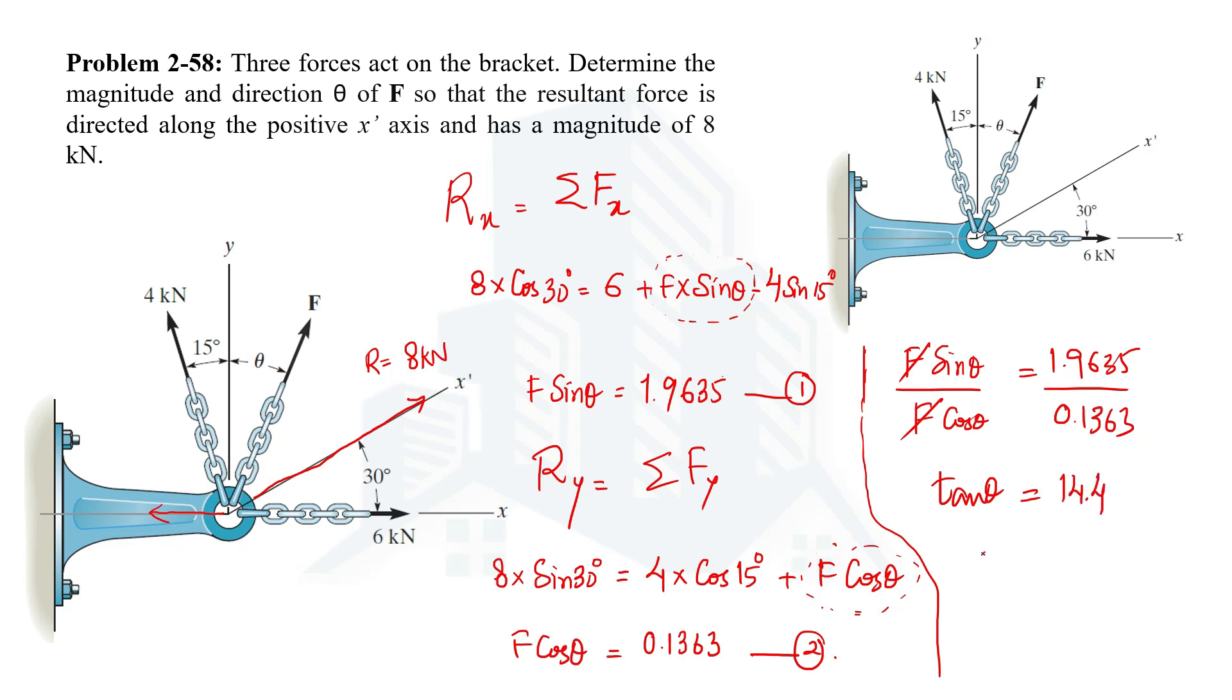From here we will have theta by taking tan inverse of 14.4 and the angle would be 86 degrees. So we have just calculated theta which is 86 degrees.